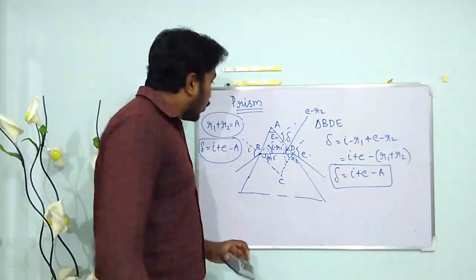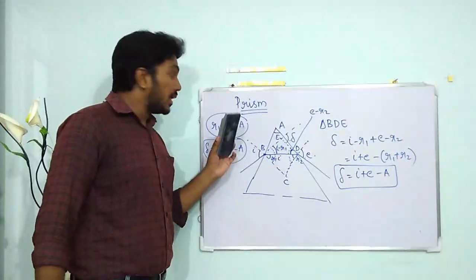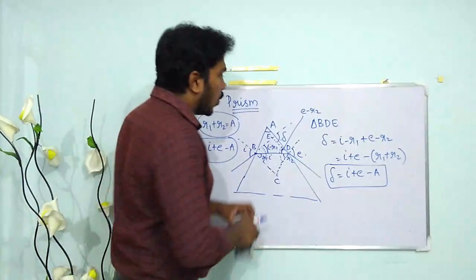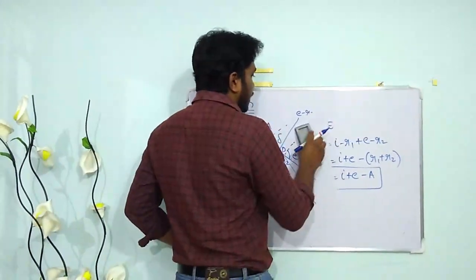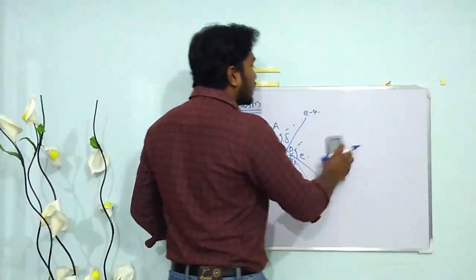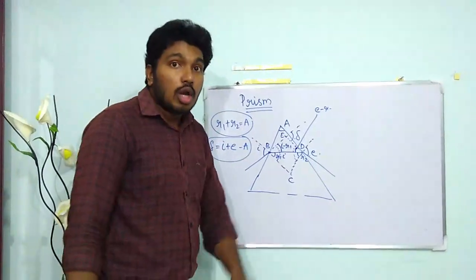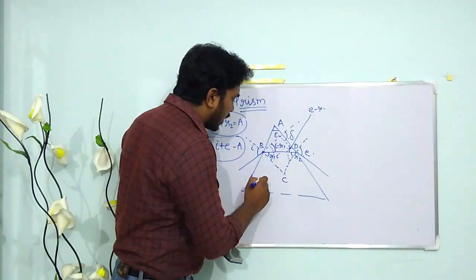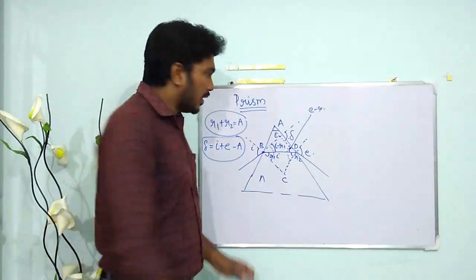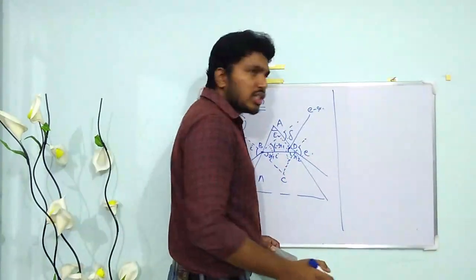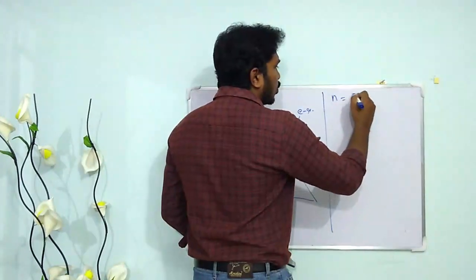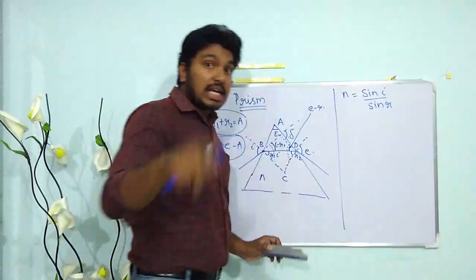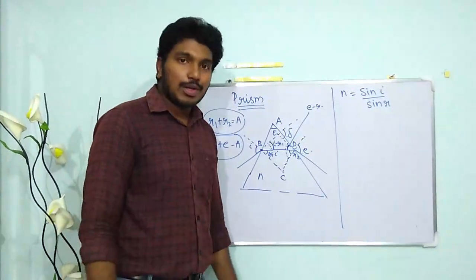So we have two conditions: r1 + r2 = A, and delta = i + e − A. Using these two conditions and Snell's law, we can find the refractive index of the prism. We call the refractive index n, and from Snell's law we write n = sin i / sin r.